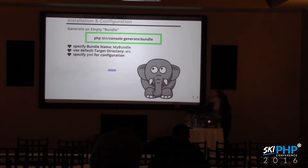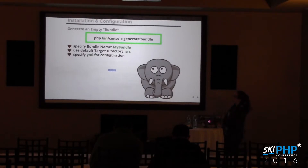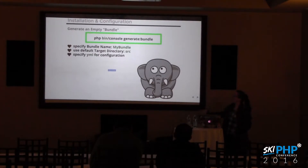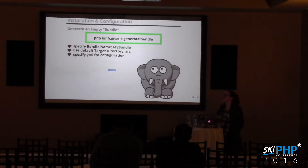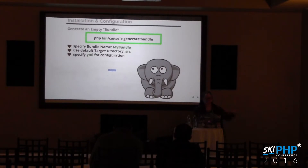The generate:bundle command will ask you to specify a bundle name — name it whatever you want followed by the word 'Bundle', which is a Symfony naming convention. Set the default target directory to 'src' and go ahead and use that as default. Specify YAML for configuration — I prefer YAML, so that's what I'm going to cover. If you want to do something else, there are all sorts of docs available.